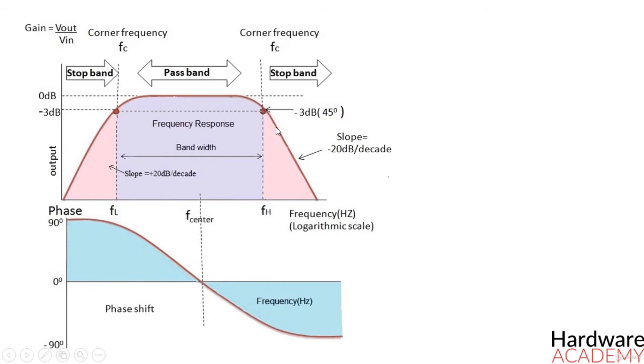After the higher cutoff frequency, the output decreases at a slope of minus 20 decibel per decade.